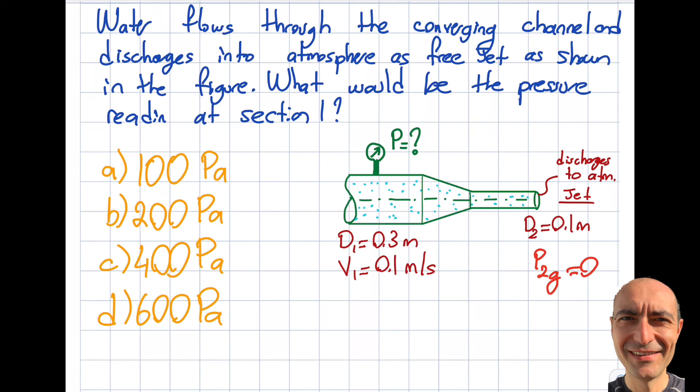Here's what the question says. I have water flowing through a converging channel that discharges into the atmosphere as a free jet. The pressure at the exit, being open to atmosphere, will be zero if I use gauge terminology, and I recommend using gauge terminology.